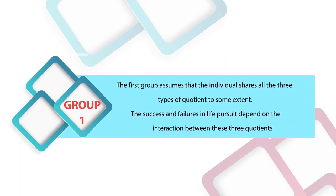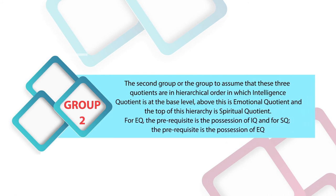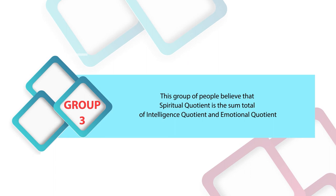People can be categorized in three groups based on their ideologies about these types of intelligence. The first group assumes that an individual shares all three types of quotient to some extent, and success or failure depends on their interaction. The second group assumes a hierarchical order: IQ is at the base, EQ above it, and SQ at the top — with IQ being a prerequisite for EQ and EQ for SQ. The third group believes spiritual quotient is the sum total of intelligence quotient and emotional quotient.